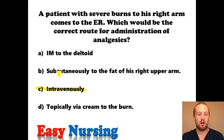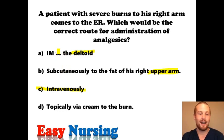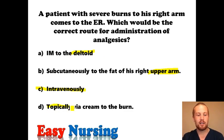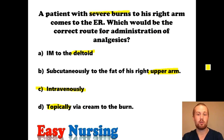With a burn patient, especially with burns to the arm, it doesn't tell you how far up the arm has been burned — it may be burnt up to the deltoid. You'd want to avoid subcutaneous and IM anyway because they take a while. Intravenous is going to provide almost instantaneous pain relief. Topically, you're probably not going to apply much because that arm is severely burned, it may be irritating to the tissues, and you don't want to put them at risk for infection. The answer is intravenous pain control for severe burns.